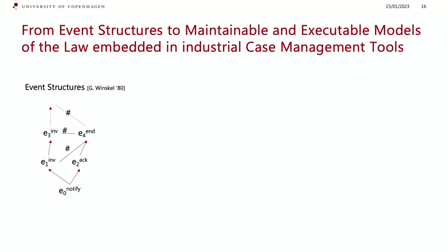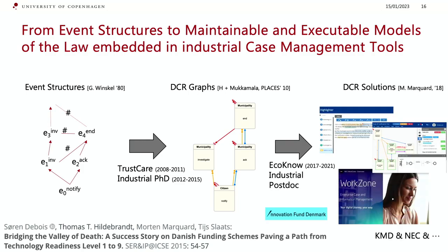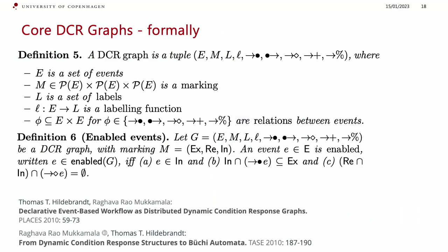The system came from a formal model called event structures, developed in the 1980s. We generalized event structures so you can execute activities or events several times. We then made industrial tools, and it is now embedded in a big workflow system sold by NEC Corporation in many countries around the world. Formally it is a graph; in the core model there are five different relations, plus many extensions. You can locally decide whether an activity is enabled or not.